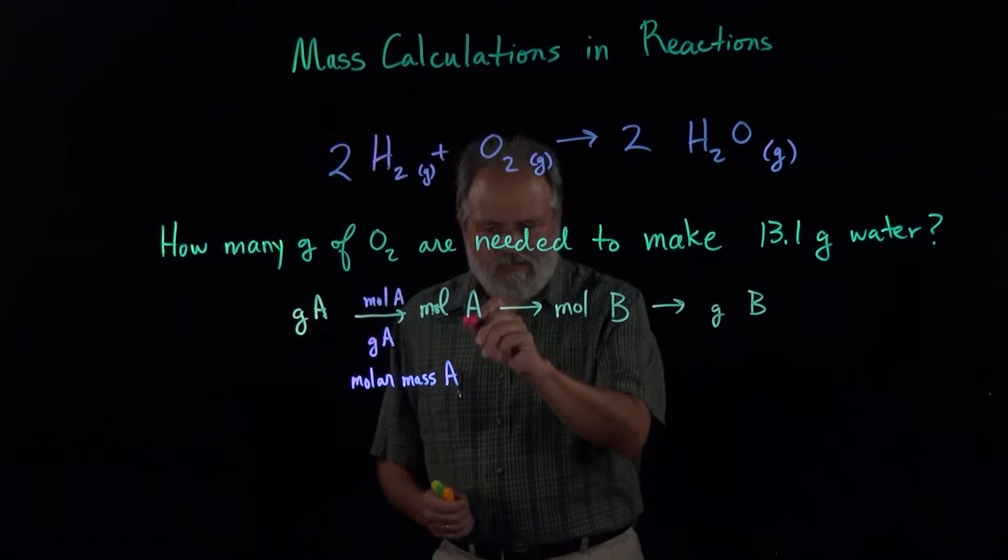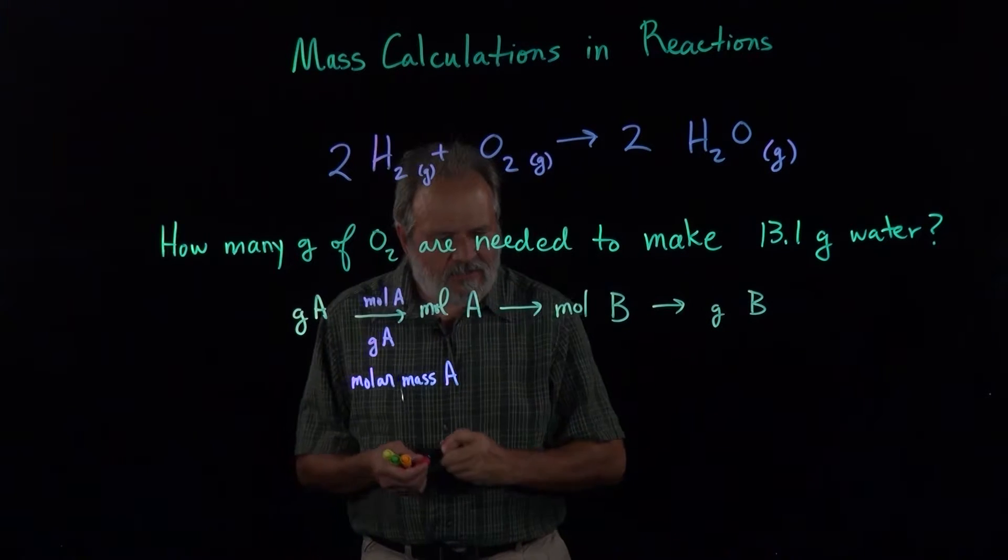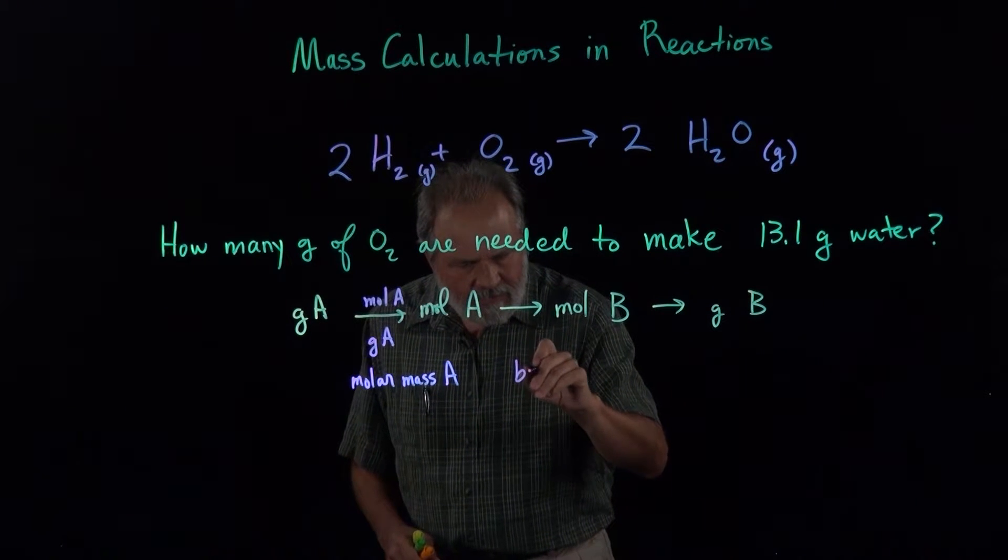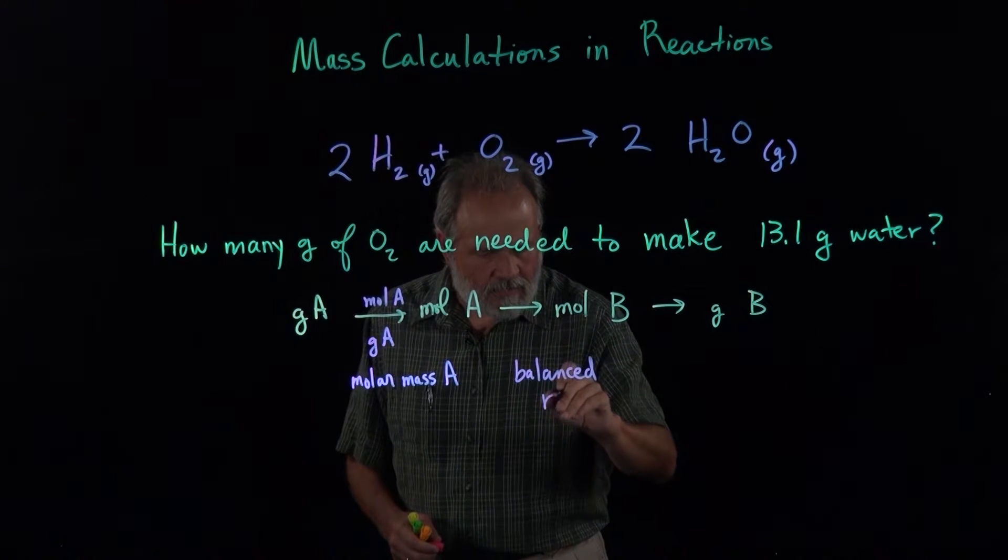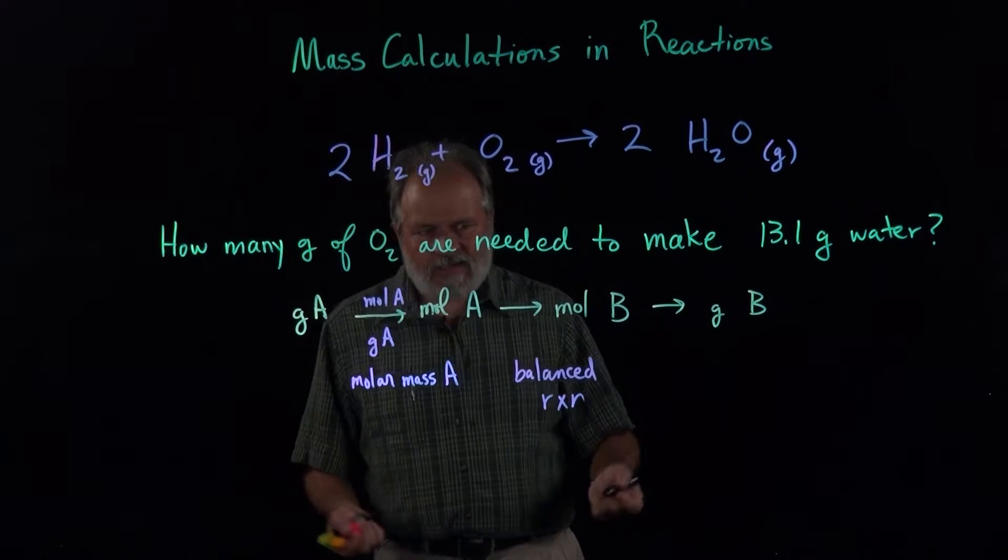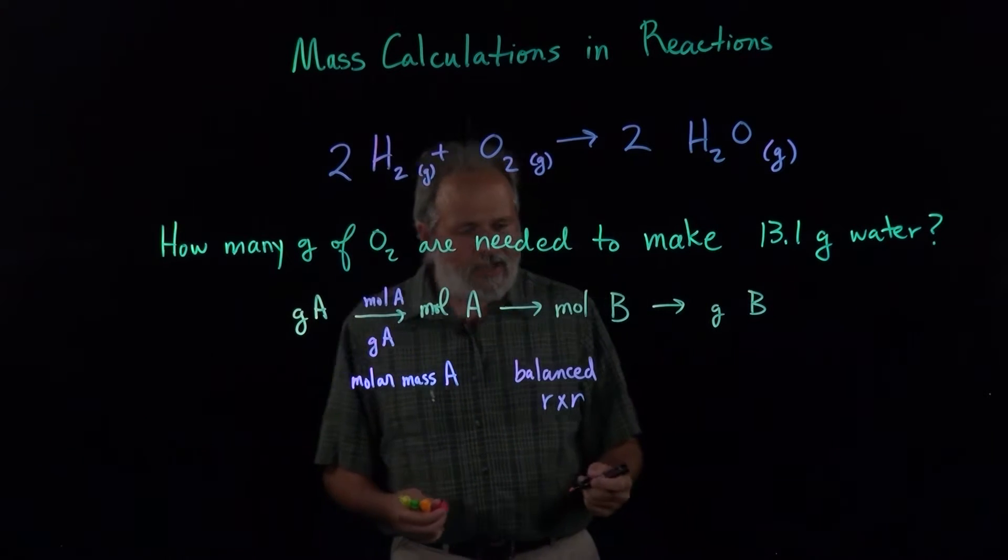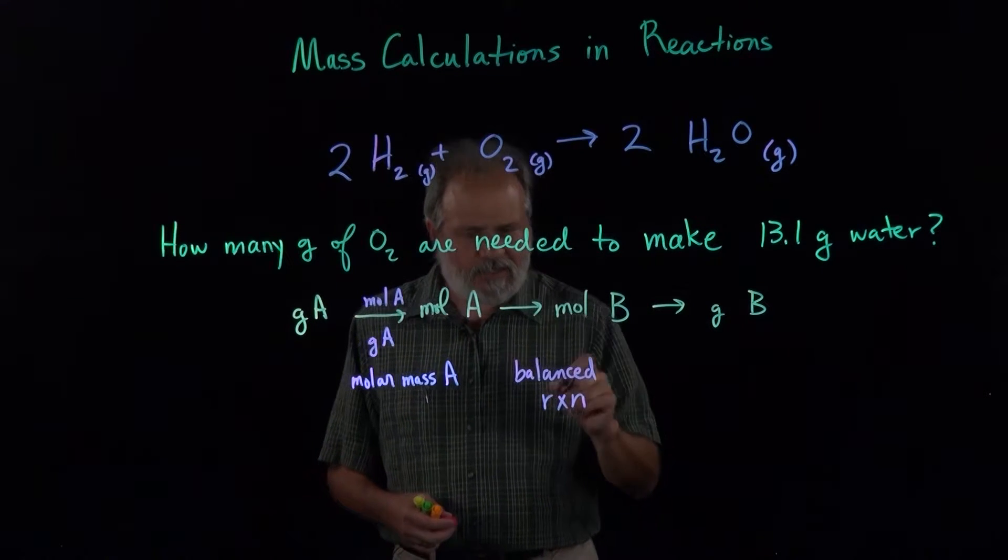For the second step, we're going to convert moles of A to moles of B, and that's going to use the balanced chemical reaction. It has to be balanced, otherwise the number ratio won't be right, and we'll get the wrong answer.